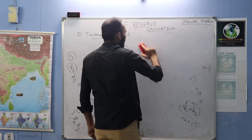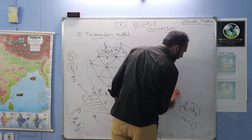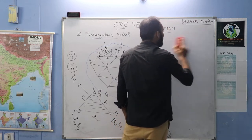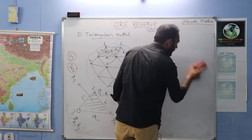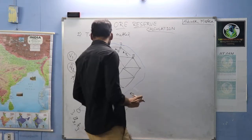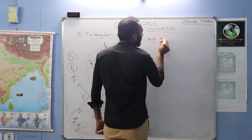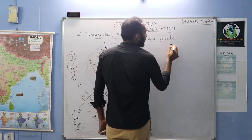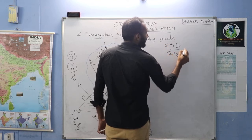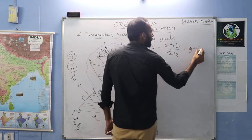Now going for grade. In the previous grid pattern case, average grade was found by multiplying thickness and grade of each block, summing them, then dividing by the sum of all thicknesses: G = Σ(Ti × Gi) / ΣTi. Here in the triangular method it will be different.